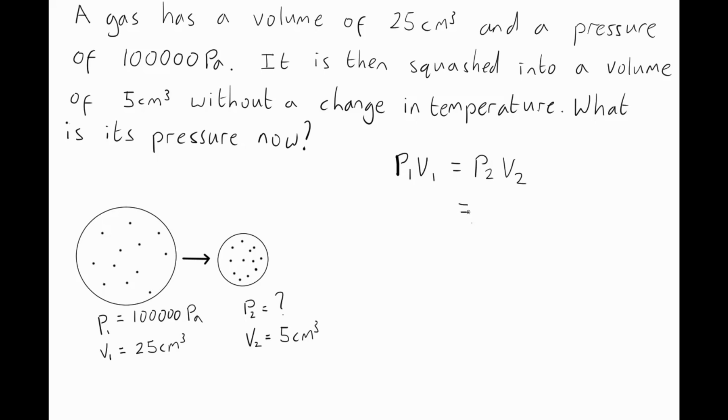The one we're actually trying to find out here is pressure 2. So, why don't we write it out like this: Pressure 1 times volume 1 divided by volume 2 will give us the pressure in situation 2.